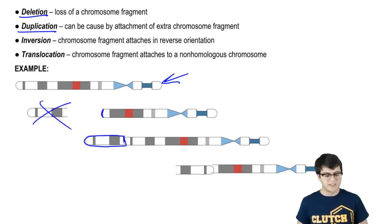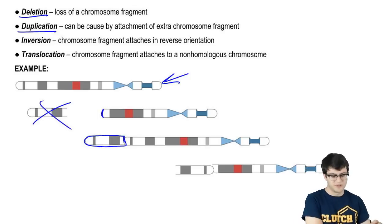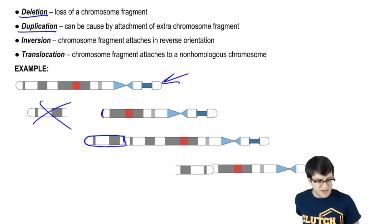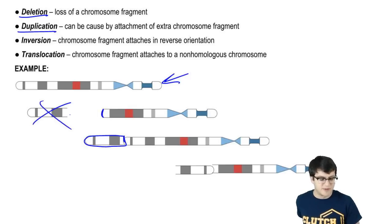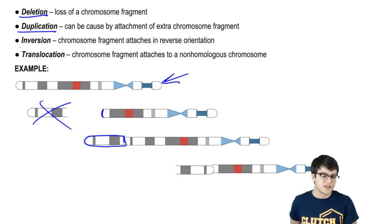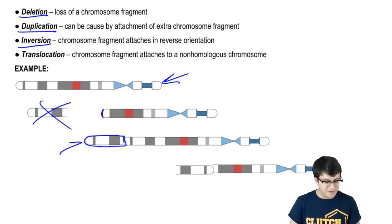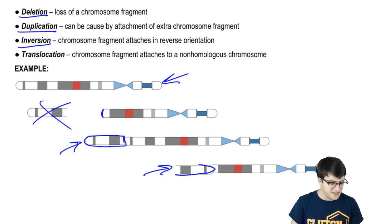A duplication can be just as bad as a deletion — it can be just as harmful. Sometimes a duplication results from a fragment breaking off and being reattached to the wrong chromosome, but that fragment can also be reattached in the wrong orientation, and we call this inversion, where you have that fragment but it gets reattached backwards, as we see here.